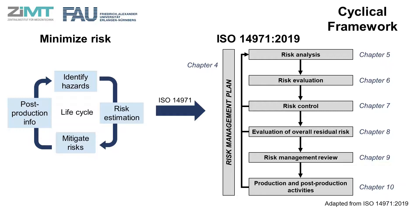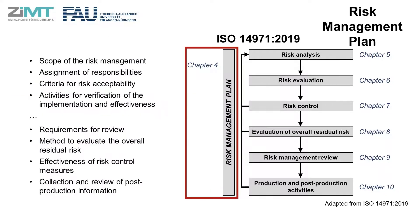Now that we are familiar with the background of risk management, we can dive deeper into each part of the process. When applying the standard, the first thing you will need to do is establish and document a risk management plan. The risk management plan defines the scope of the risk management process, including but not limited to the responsibilities, criteria for risk acceptability, and activities for verification. As the schematic shows, this plan accompanies all the subsequent processes, and therefore its quality is crucial for the overall risk management.